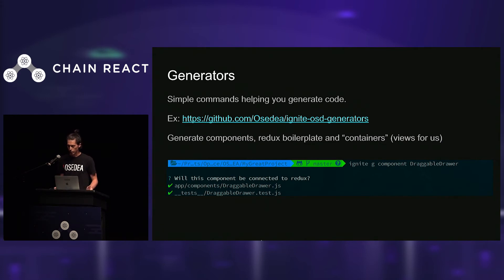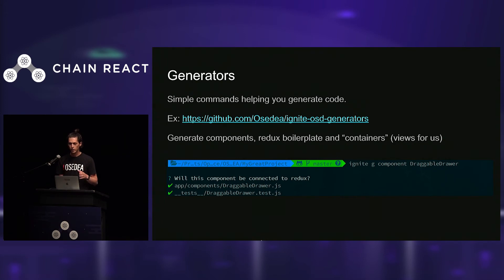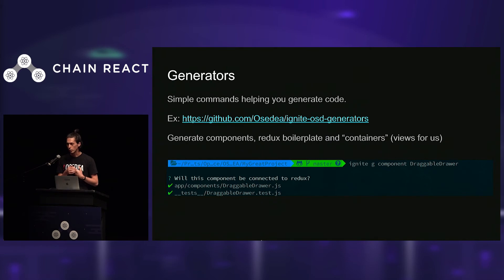For example, if I want to generate a component by hand, I go to my components folder, create a new file, copy-paste code from another component, clean it up, rename it. If I need it connected to Redux, I add the imports, add the connect, and all of that — then I can start to work. That's easily three to five minutes. With generators, I just enter a command with parameters like my component name 'draggable drawer', it creates the file, asks if I want it connected, if I want it to be a pure component or functional component, puts in the right code, and even creates my basic Jest test. That takes 20 seconds.